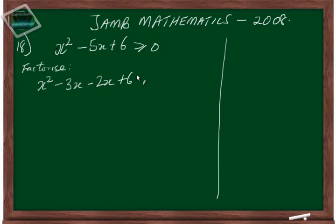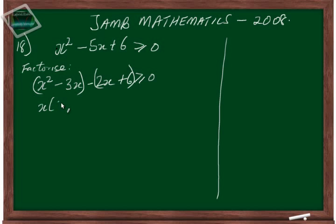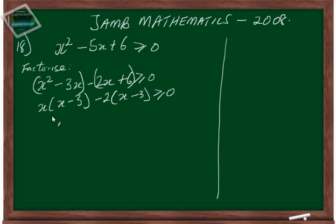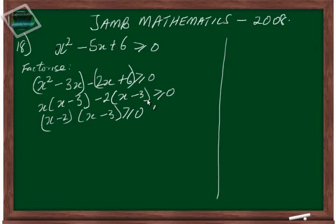So we have x squared minus three x minus two x plus six, which is greater than or equal to zero. Putting parentheses around them and taking out common factors, you get x times x minus three, and the common factor of two gives x minus two. Grouping these factors together, you have x minus two times x minus three, greater than or equal to zero.